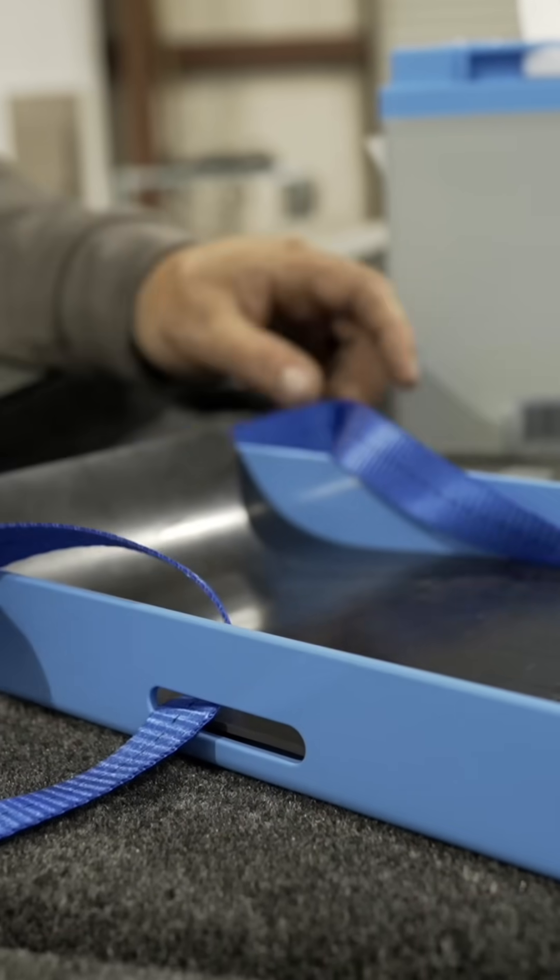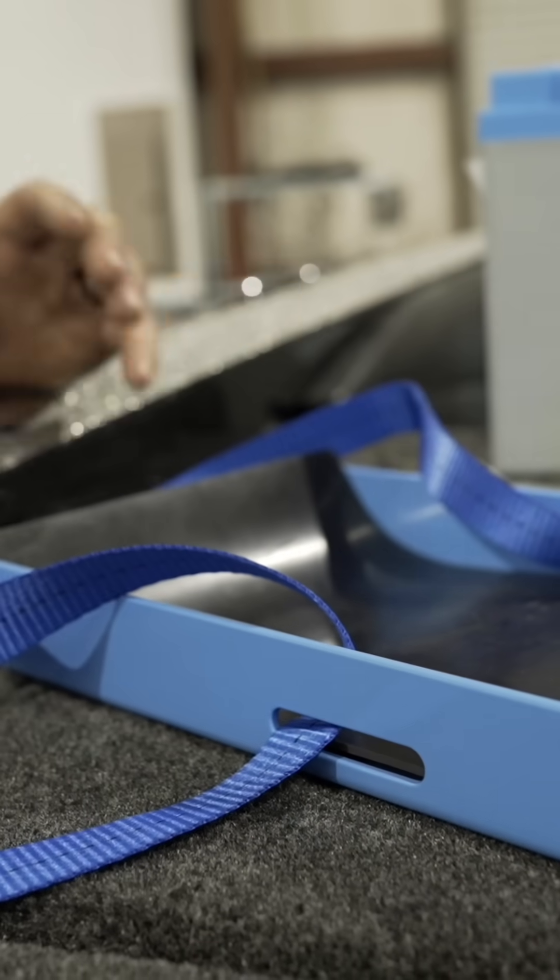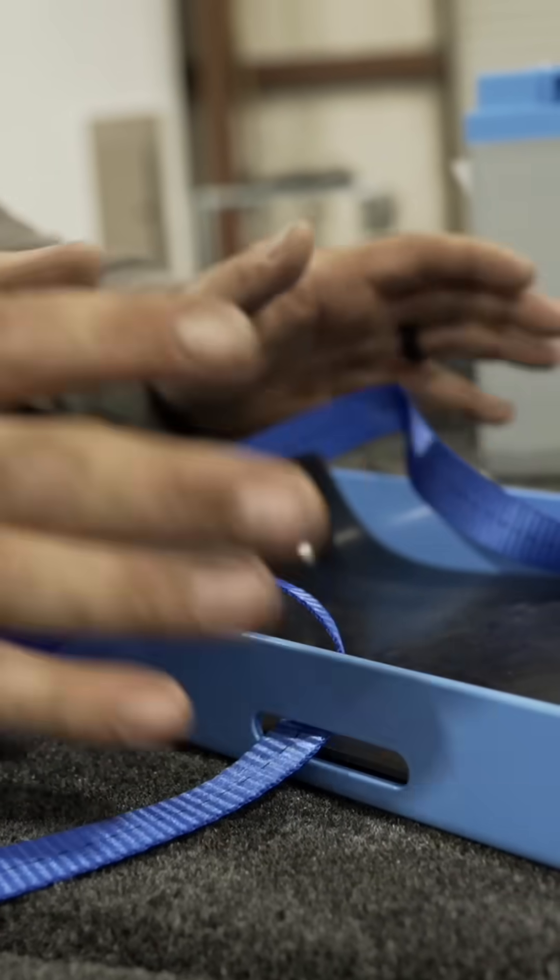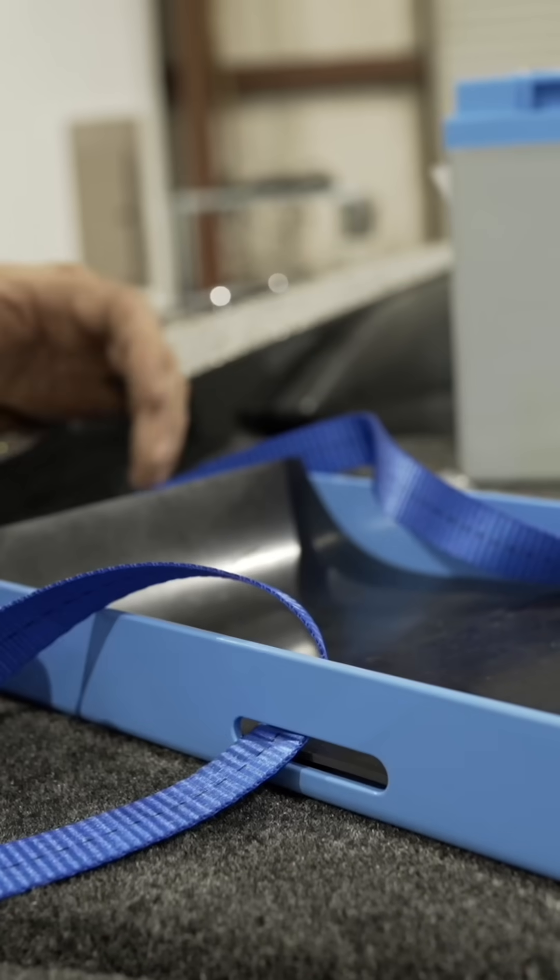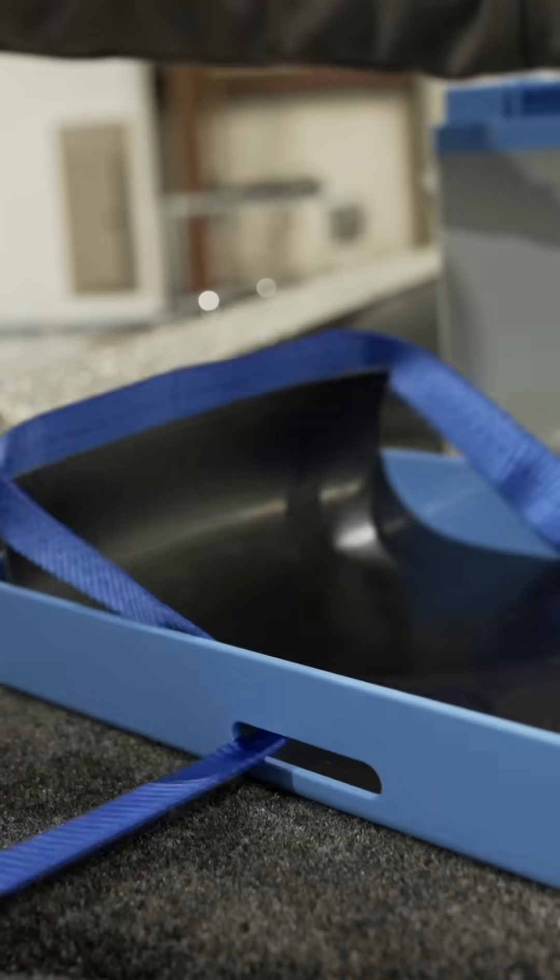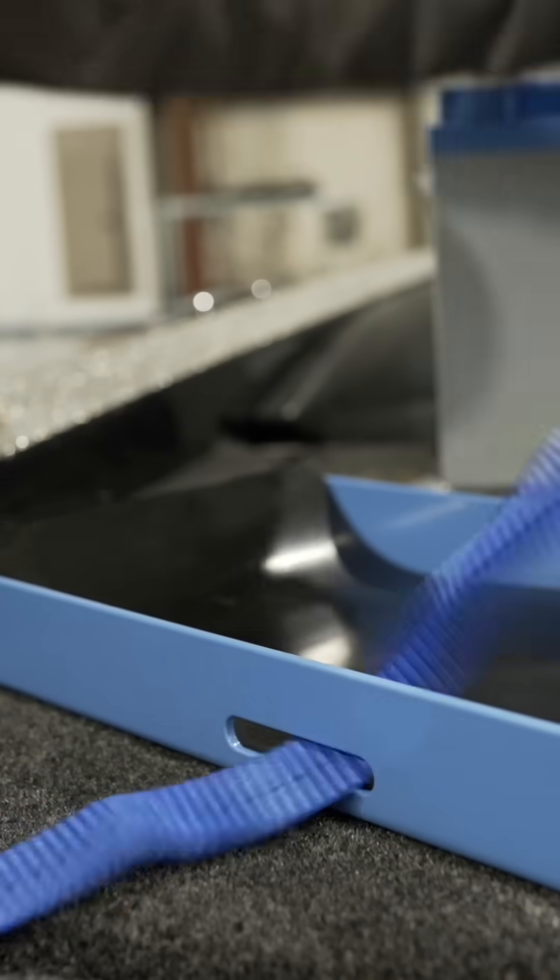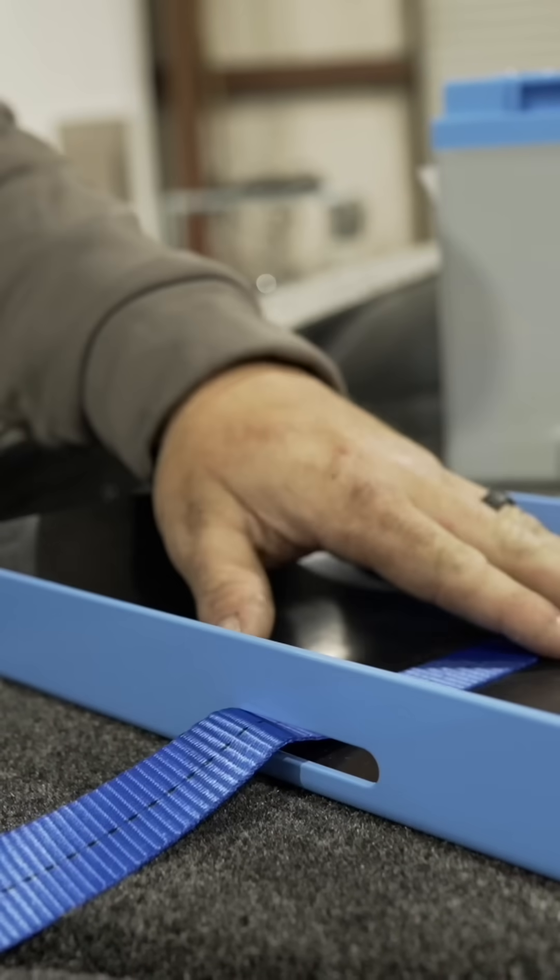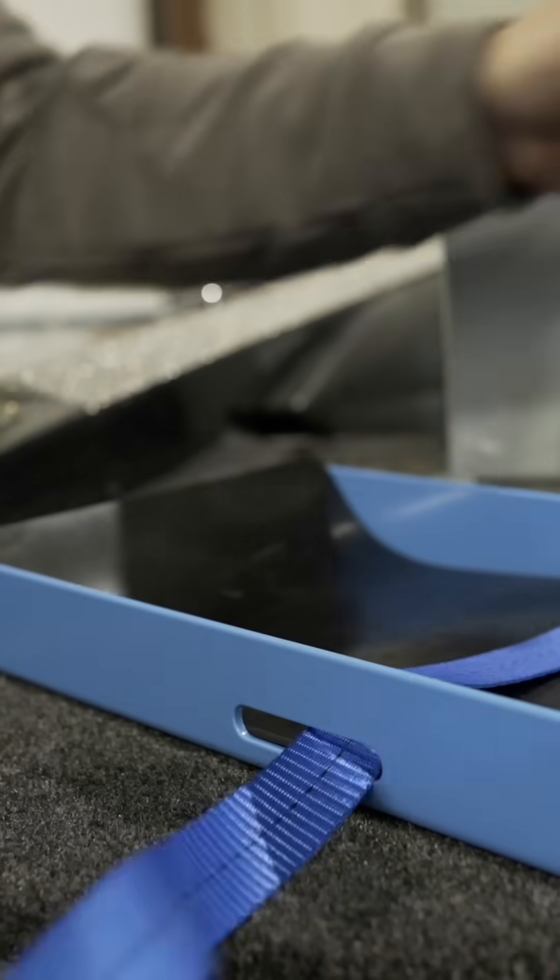All right, so this is a real good example of how to utilize the strap system for the powerhouse trays. Now the mistake a lot of people make is they'll just run this strap underneath the battery like this and then run the strap over.